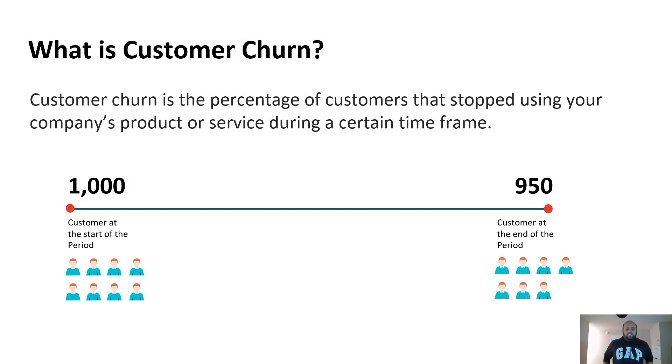So what is customer churn? Customer churn, think it as a percentage of customers that you will lose to your competitors or they would go out of business. If you had thousand customers at the start of the period and at the end of the period you have 950 customers, so you have a churn of 5%, 50 divided by thousand.